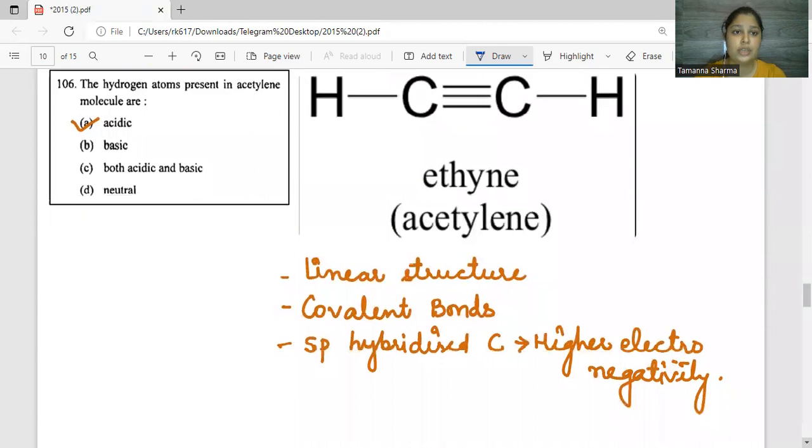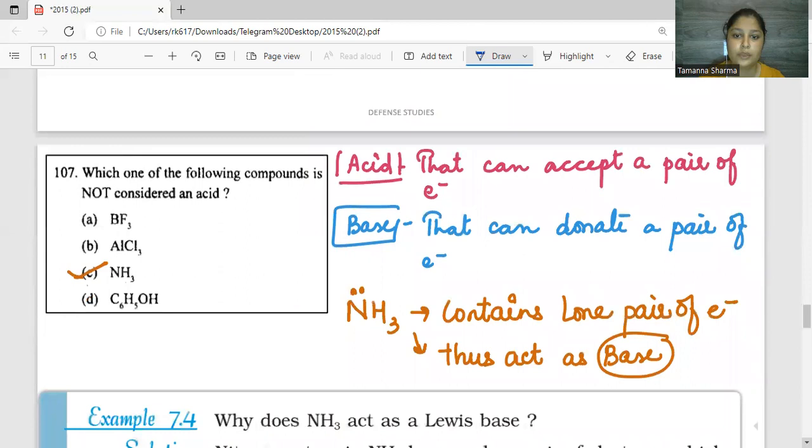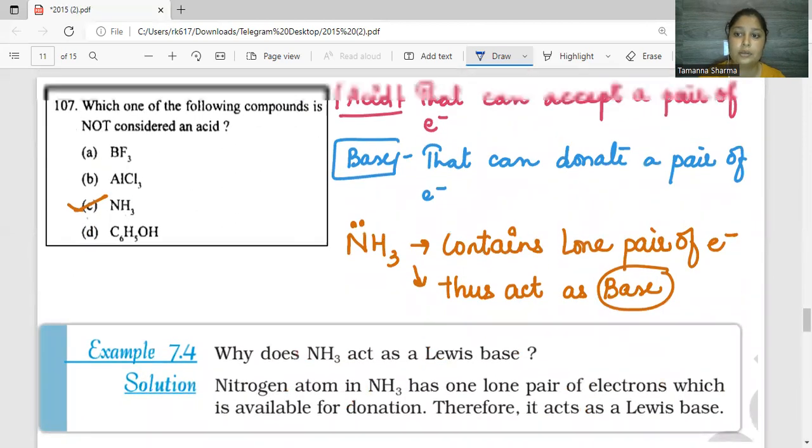Next question: hydrogen atoms present in acetylene molecules are. Acetylene molecule has two carbons with a triple bond, so this is a linear structure with covalent bonds and SP hybridized carbon. This is why it has high electronegativity. This is your direct NCERT question.